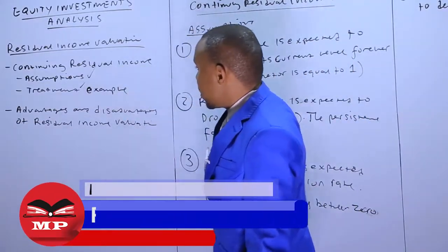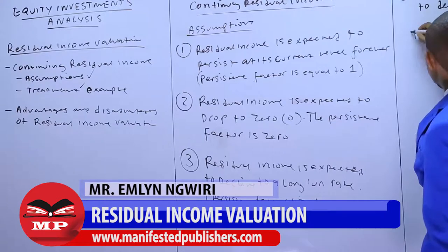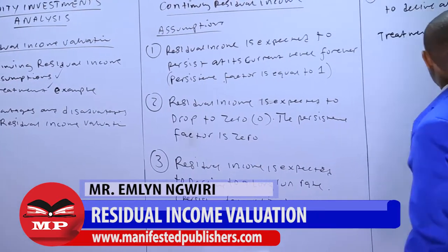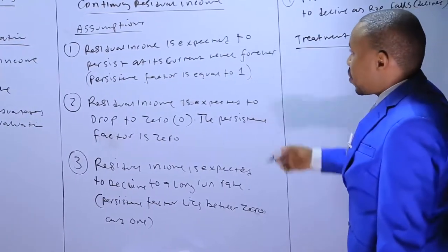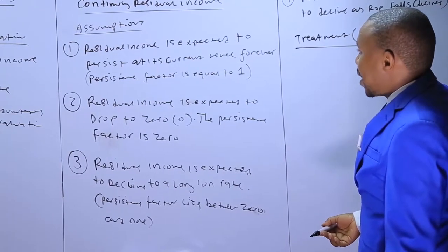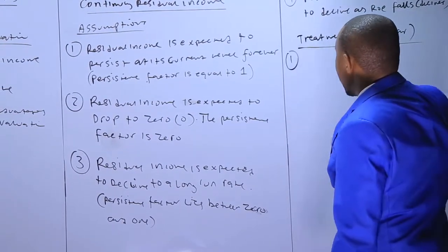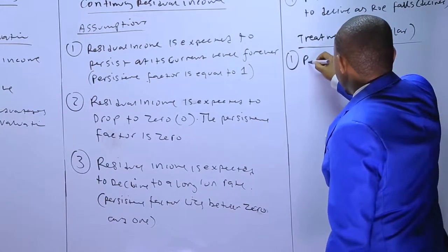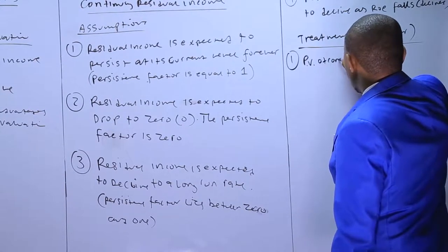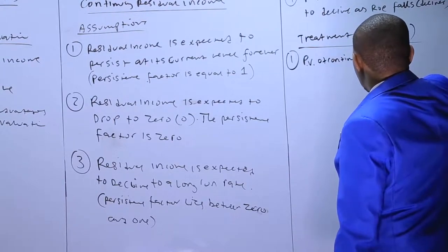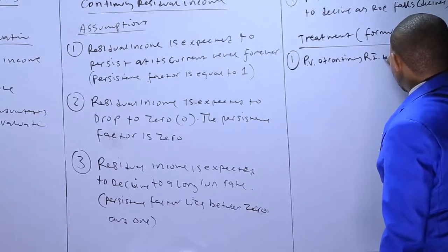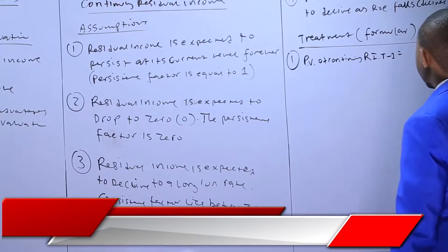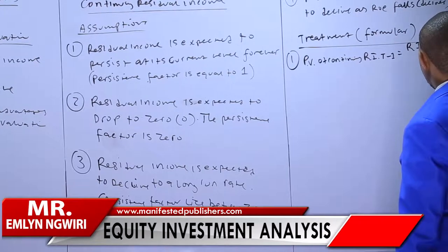We're going to look at the treatment of residual income. In the first case, we're saying the residual income is expected to persist at its current level forever. The present value of continuing residual income, denoted as RI, at time t minus one is given as the residual income at time t divided by r.